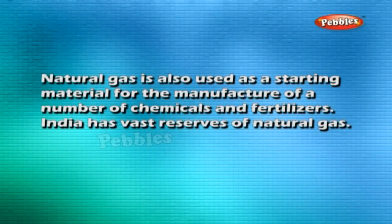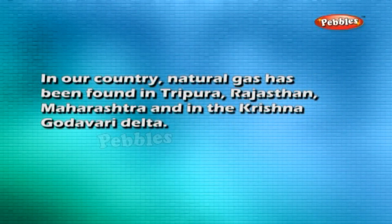Natural gas is also used as a starting material for the manufacture of a number of chemicals and fertilizers. India has vast reserves of natural gas. In our country, natural gas has been found in Tripura, Rajasthan, Maharashtra and in the Krishna-Godavari Delta.